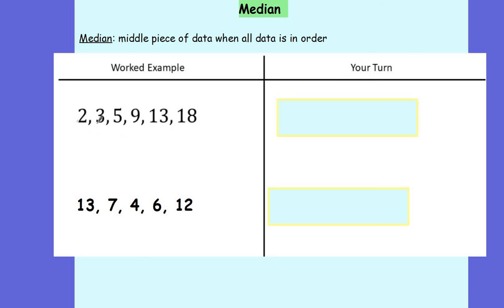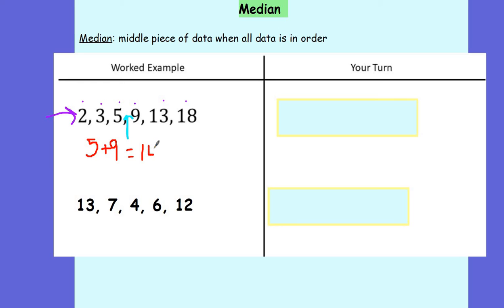Here's my first example. I've got 2, 3, 5, 9, 13, and 18. These are already in order, which is going to help me out. To find the median, I count from each end — 1 from each end: 2 and 18; 2 from each end: 3 and 13; and then 3 from each end: 5 and 9. The median is between 5 and 9. I add together 5 and 9 to get 14, then divide by 2. 14 divided by 2 is 7, so the median for this set of numbers is 7.